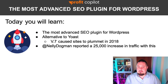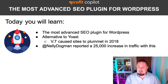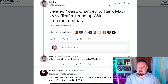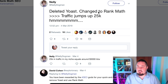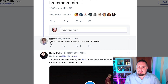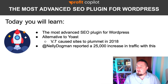And with this plugin that I'm talking about today, a Twitter user called Nelly Dogman reported a 25,000 increase in visitors. He says: deleted Yoast, changed to Rank Math — that's the WordPress plugin we're talking about today — traffic jumps to 25,000. He goes on to say 25K in traffic in my niche equals around three thousand dollars. So I am hearing really good reports about this plugin.